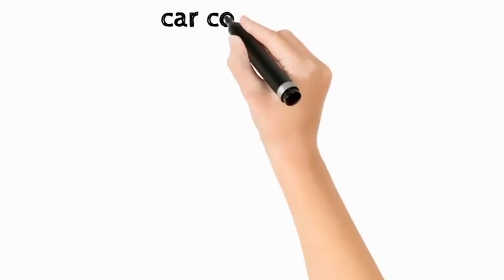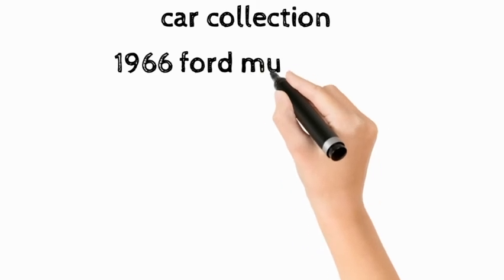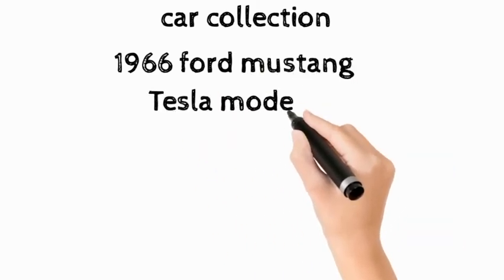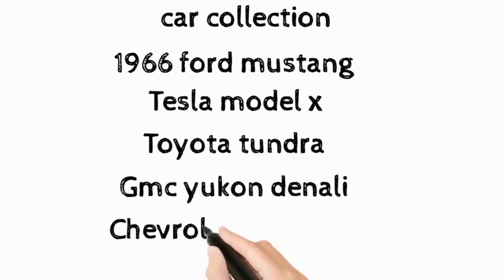Now let's talk about his car collection. Freeman has many cars such as a 1966 Ford Mustang, Lamborghini Aventador, Tesla Model X, Toyota Tundra, GMC Yukon Denali, and Chevrolet Silverado.